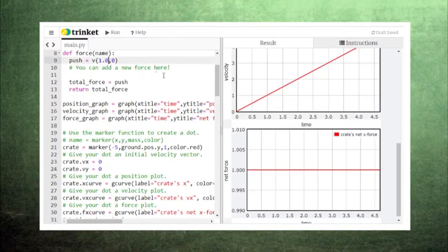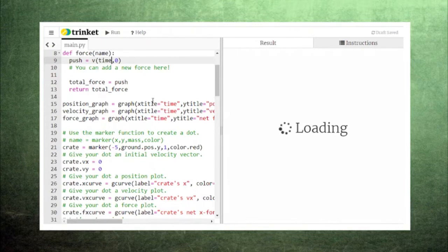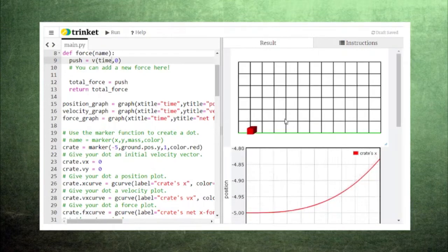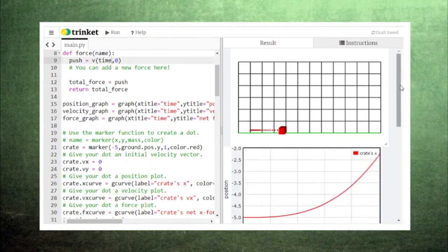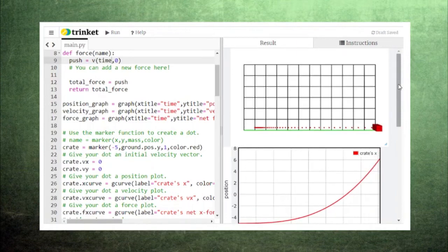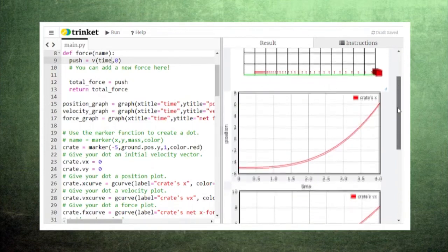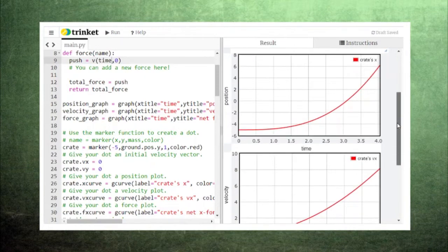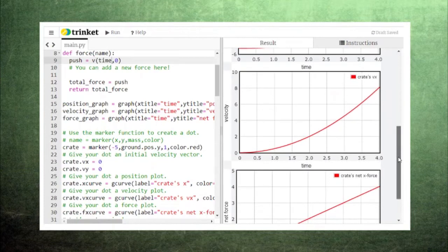Constant forces are interesting, but with our code, we can just as easily explore what happens when our force is not constant. For example, let's see what happens when our force increases linearly with time. Since this force causes a change in velocity, the velocity graph becomes steeper as the crate moves along, and our position graph is sharper than it was when our force was constant.